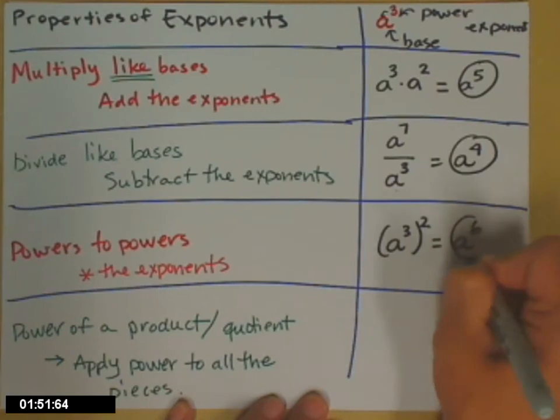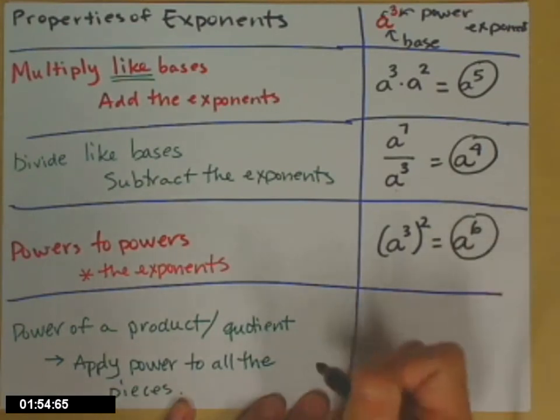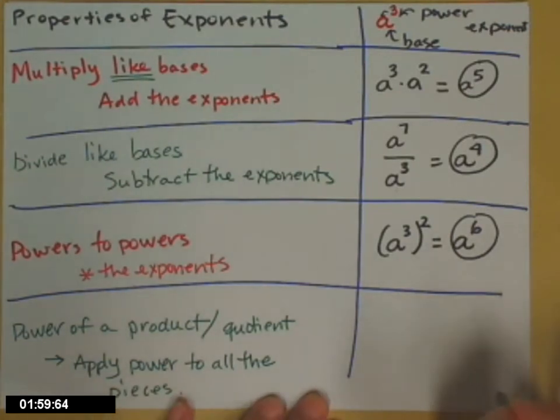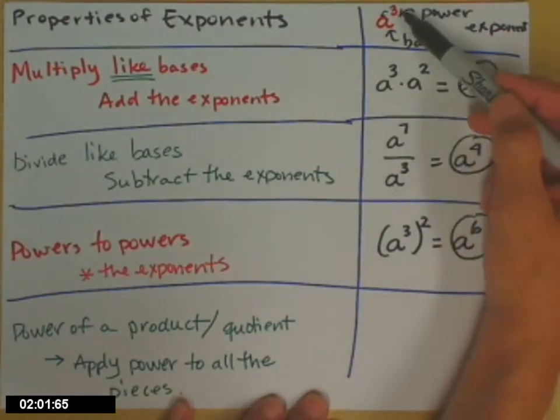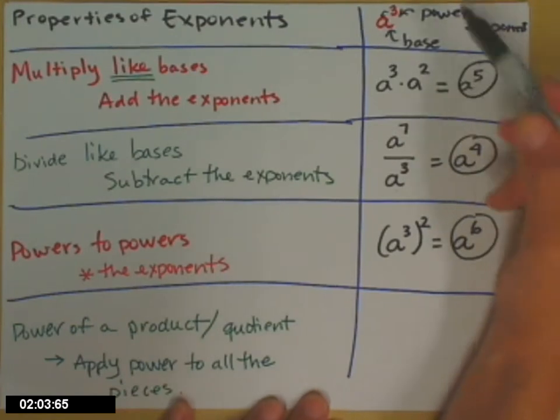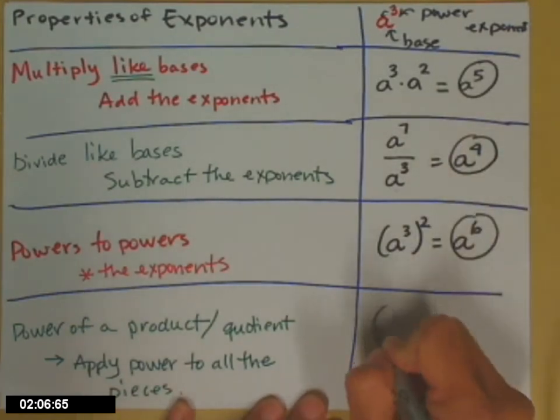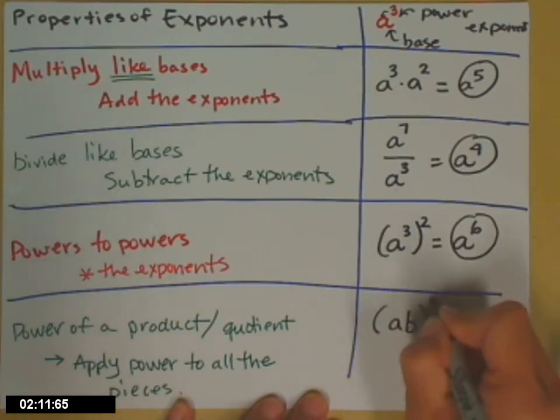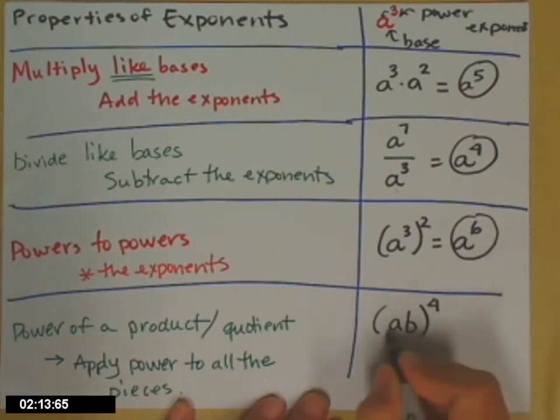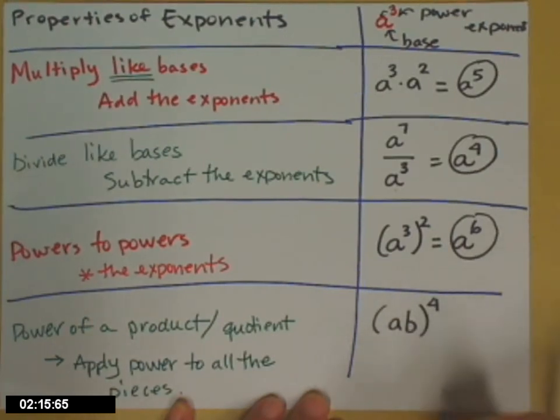And then, lastly, on this page, if I have a power and it's applied to a product or a quotient. So, up here I said that the 3, the power, only applies to what's immediately to its left, unless you put it in parentheses. So, if I have a product, a times b, and that's to the 4th, that 4 can pop in and apply to both pieces. A to the 4th times b to the 4th.